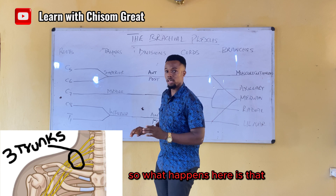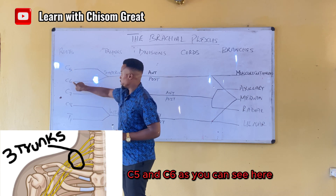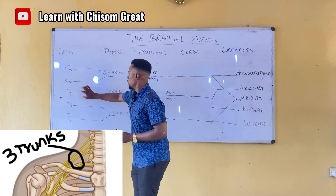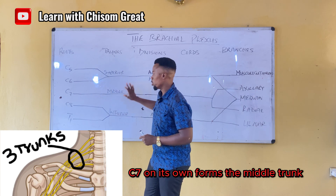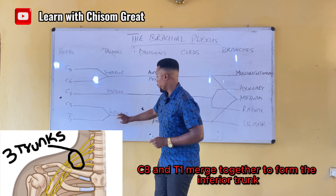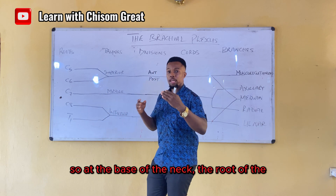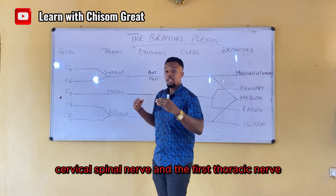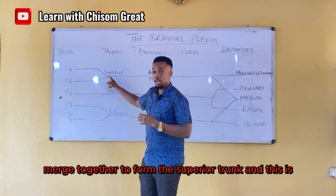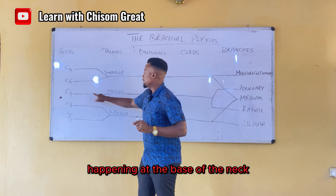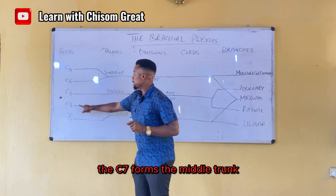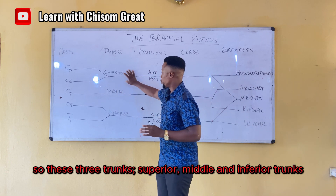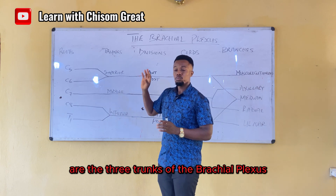C5 and C6 merge together to form the superior trunk. C7, on its own, forms the middle trunk. C8 and T1 merge together to form the inferior trunk. So these three trunks — superior, middle, and inferior — are the three trunks of the brachial plexus, and this is happening at the base of the neck.